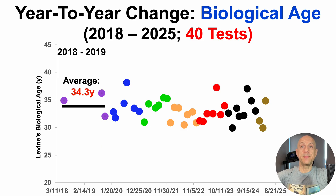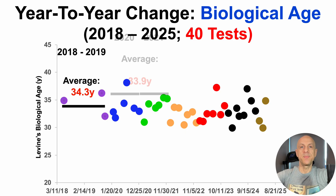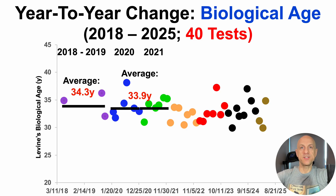Back then I only had data for three tests over a two-year span — not much different from how most people are currently testing. Over those three tests, my average biological age was 34.3 years. But then I had the idea: how many tests do I need to represent a full-year average? So I started testing more often. In 2020 and 2021, six tests each — 12 tests total over those two years — and in each of those years, average biological age was exactly 33.9 years. Although 34.3 over that initial two-year span is in the same ballpark, it may not be like that for everybody else.